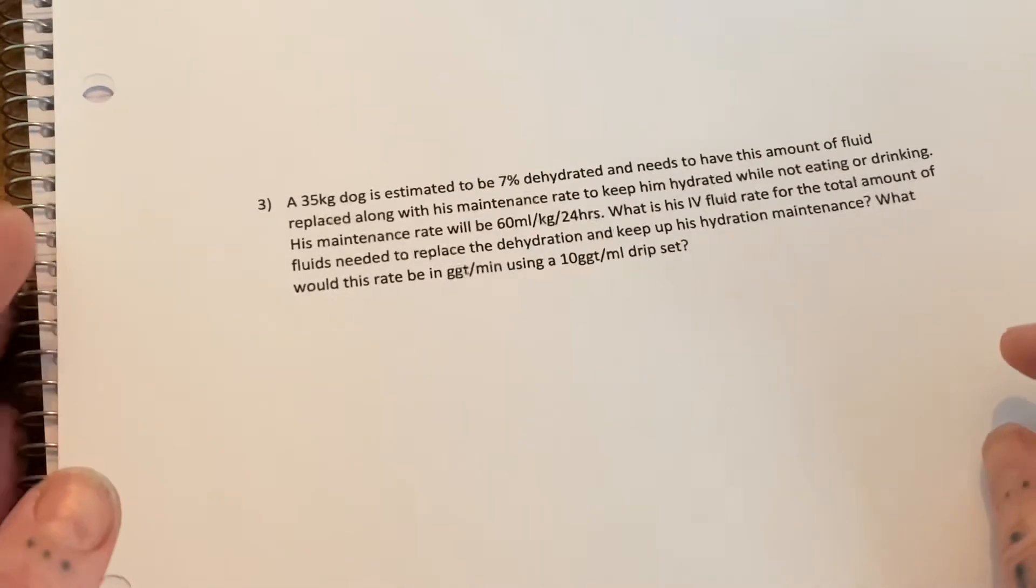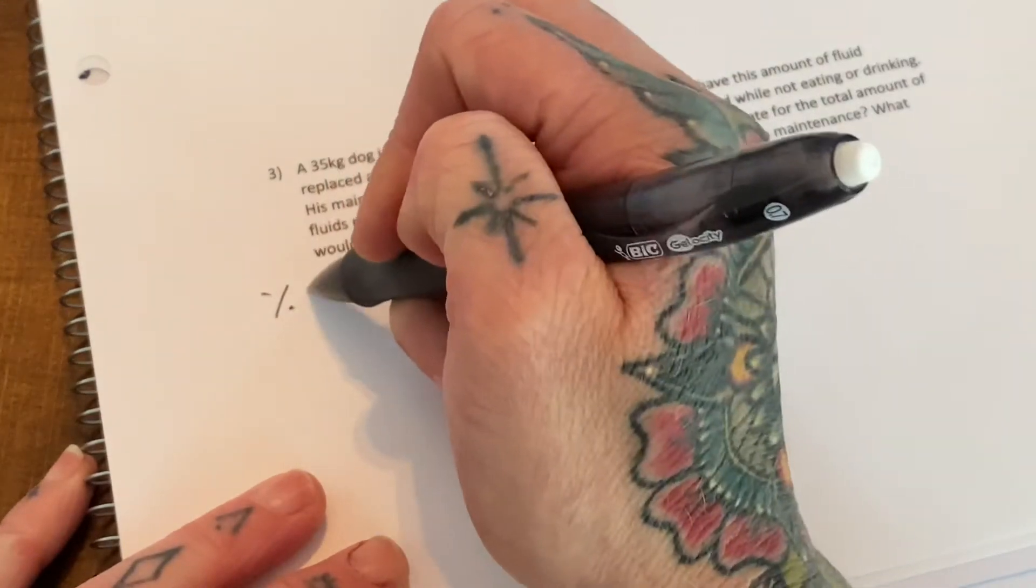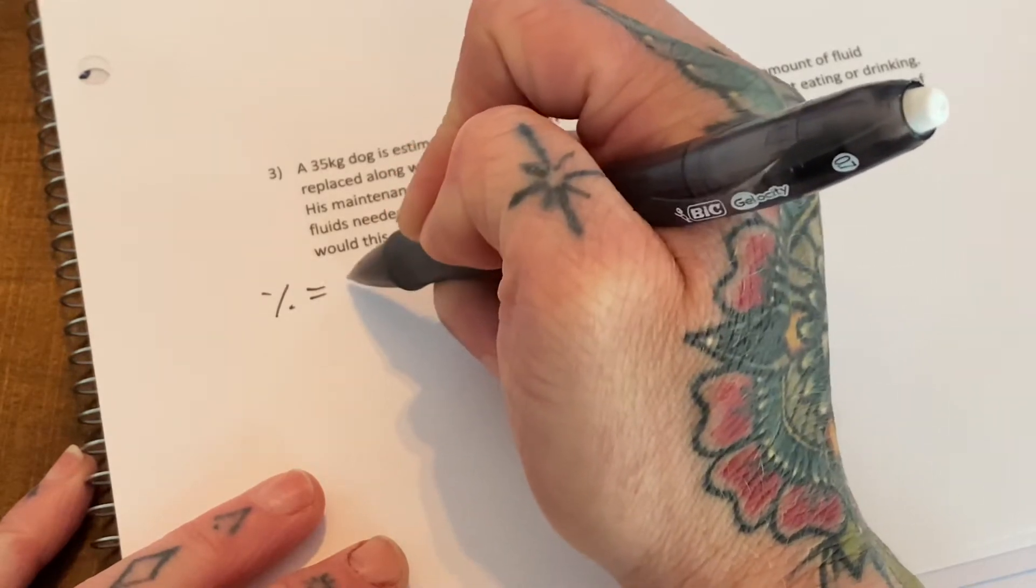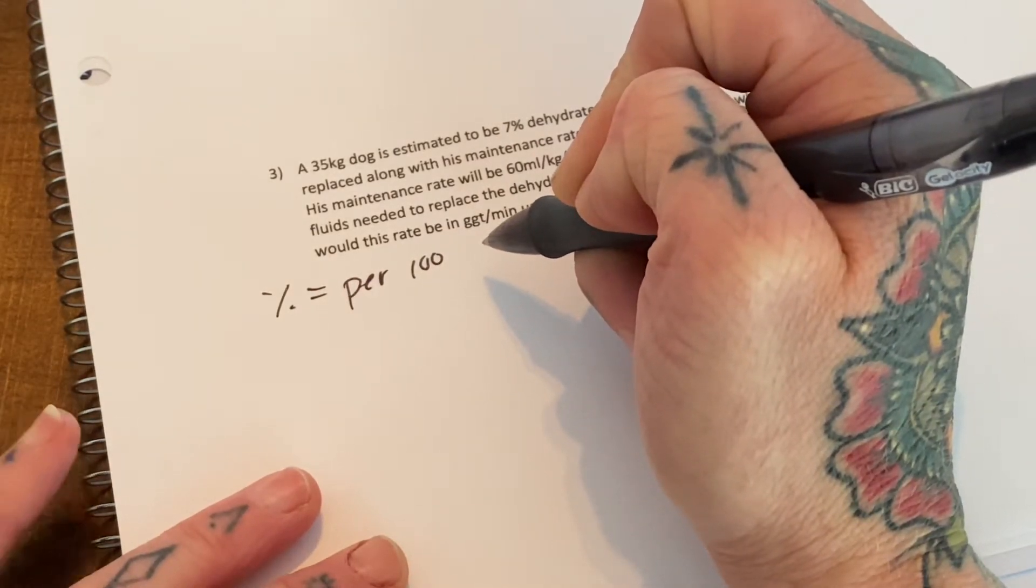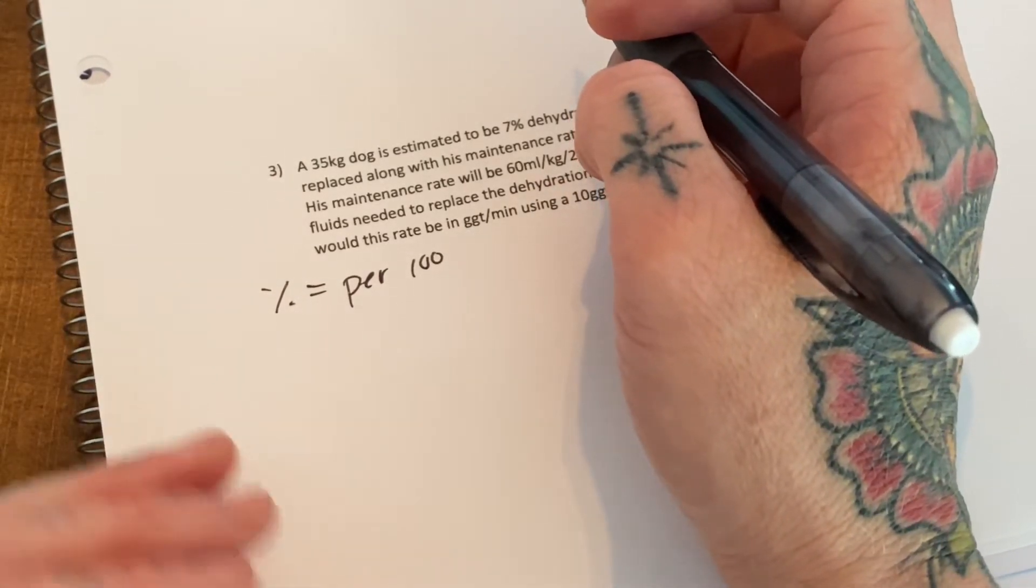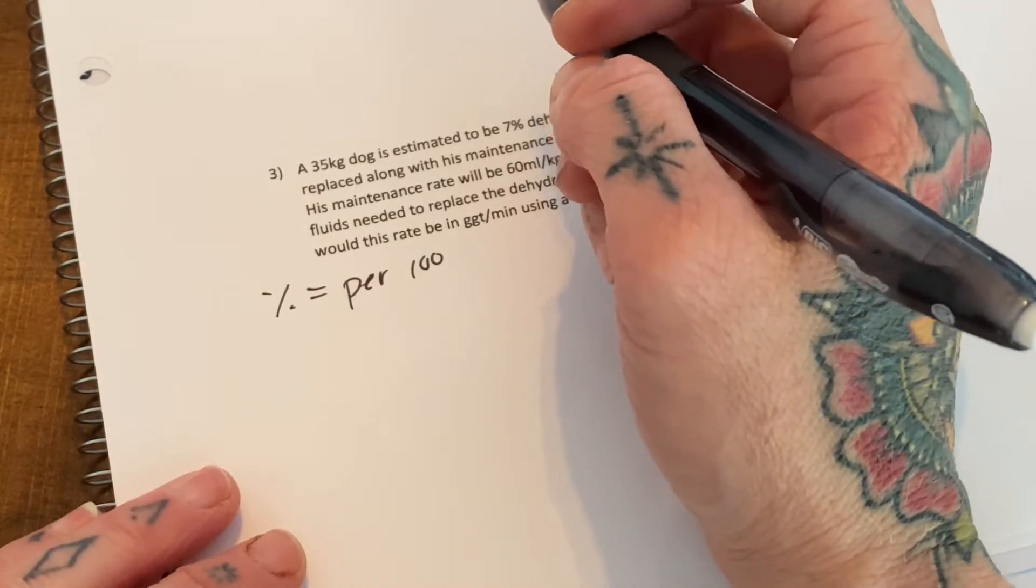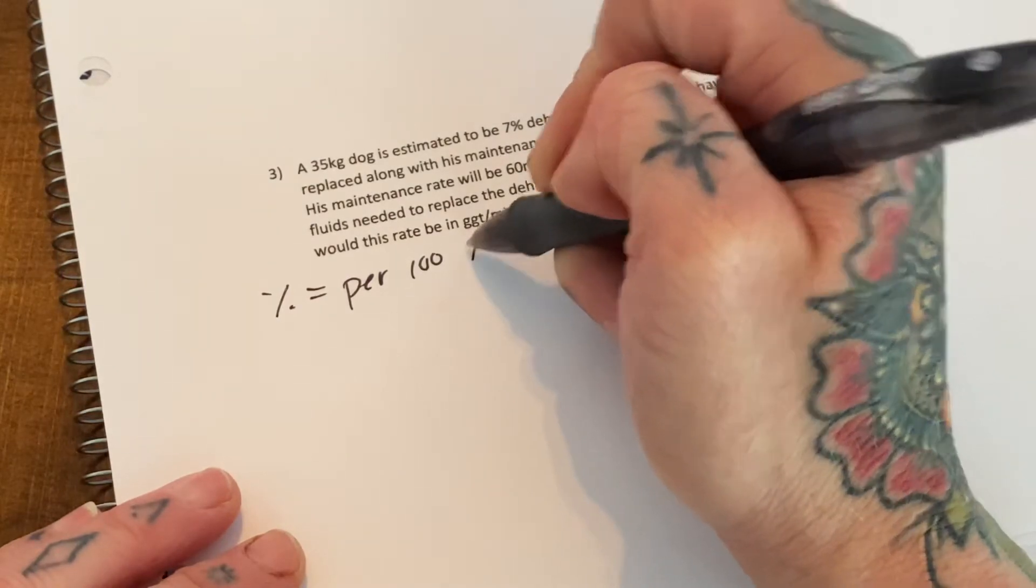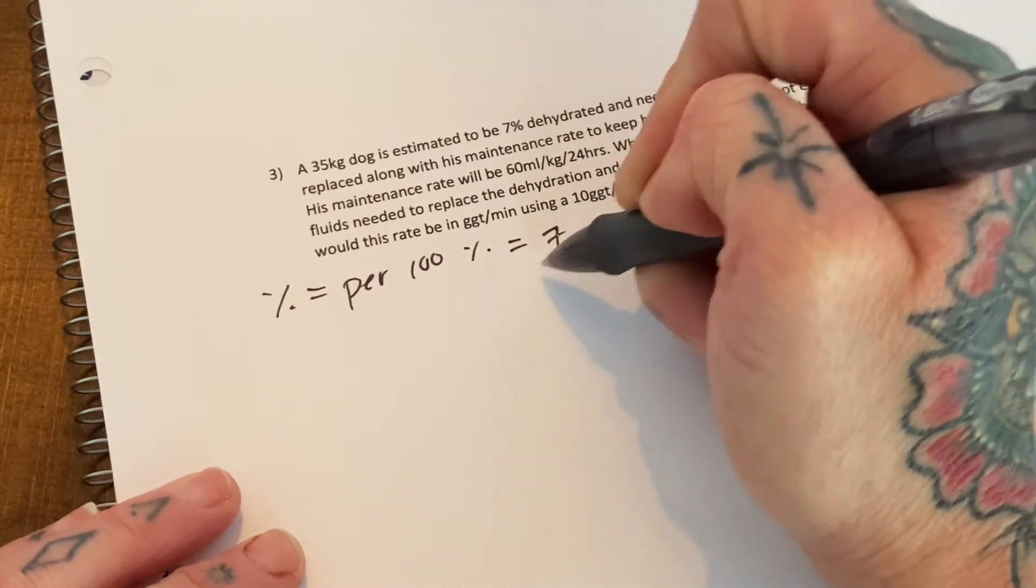I have this written out but percent equals per 100, so cent means 100. This is always going to be per 100 something. When we're talking about weight and kilograms in terms of medication and dog and cat weights, it's always going to be grams over 100 mils for medication, and when we're talking about dehydration we just have to turn the percent into the decimal.